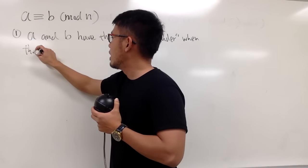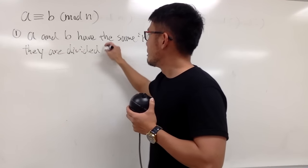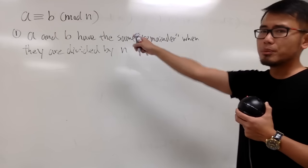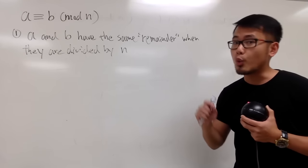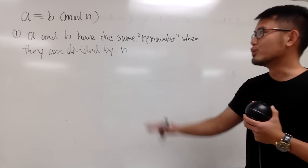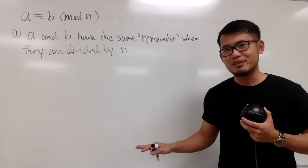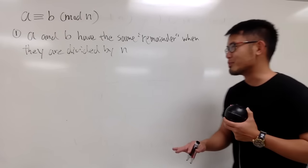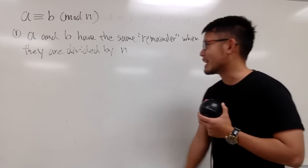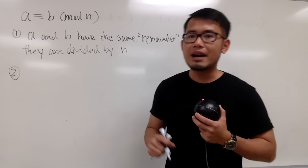A and b have the same remainder when they are divided by n. And by the way, n shall be a positive whole number greater than one—so two, three, four, five, and so on. Do not ever say n equals one; mod one kills everything. Don't do that. You are pretty much just killing all the math, killing all the number theory. So don't do that. This is the first way to interpret this notation: a and b have the same remainder when we divide a by n, when we divide b by n.